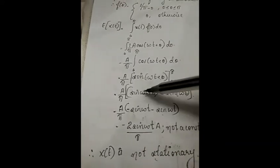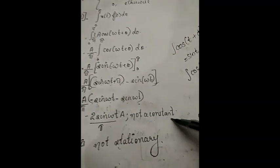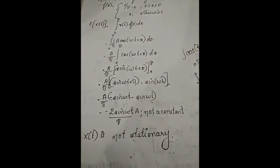Now it is not constant because the expectation of x(t) depends on t. We get (a/π)·(-2sin(ωt)) = (-2a/π)·sin(ωt), which is not constant. Therefore x(t) is not stationary. That's all.